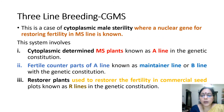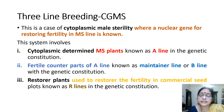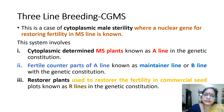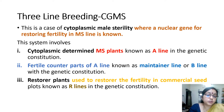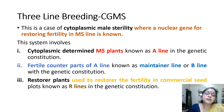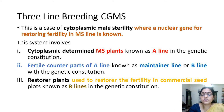Now, three-line breeding involves cytoplasmic-genetic male sterility. This is a case of cytoplasmic male sterility where a nuclear gene for restoring fertility in the MS line is known. This system involves: first, a cytoplasmic gene determined by the MS plant, also known as the A-line; second, the fertile counterpart of the A-line known as the maintainer line or B-line; and third, the restorer line used to restore fertility of the commercial seed plot, known as the R-line.